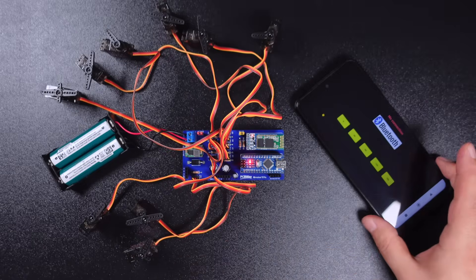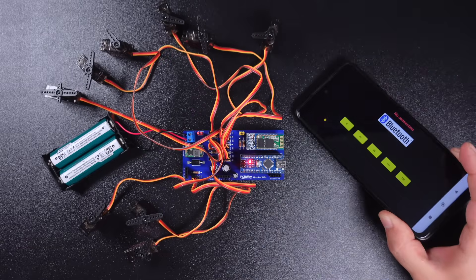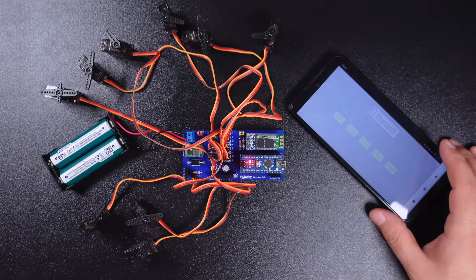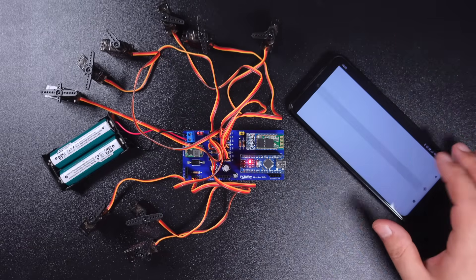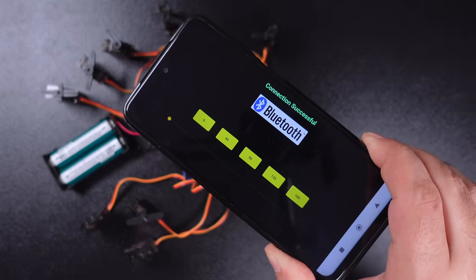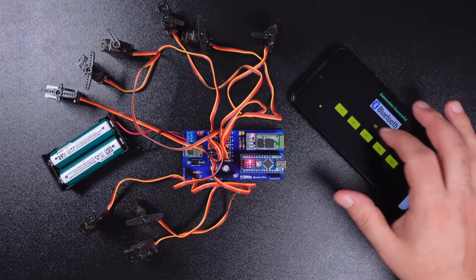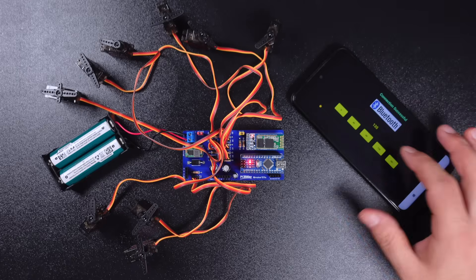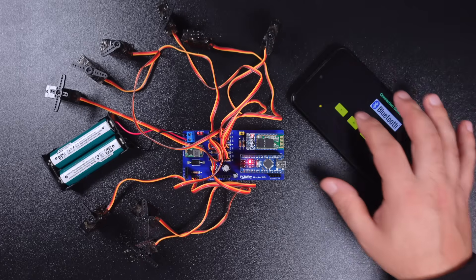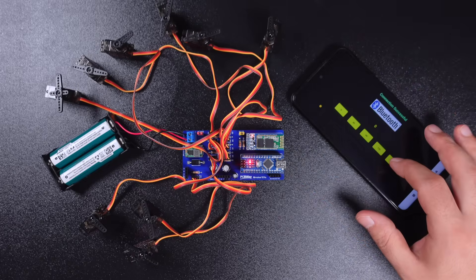Once you have the app, turn on your device's Bluetooth connection. Then, launch the application, click on the Bluetooth icon, and connect to the HC-06 Bluetooth module among the listed devices. If a password is requested during the connection, complete the connection by entering the password 1234. When communication is established, you will see connection successful. You can now wirelessly control a servo motor or multiple servo motors via the application.